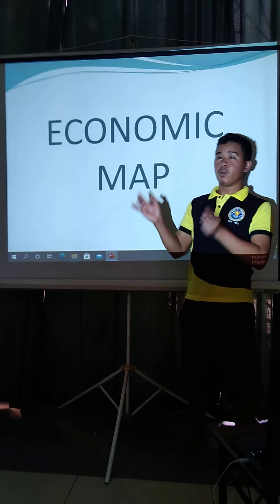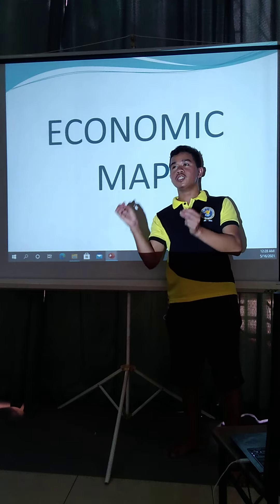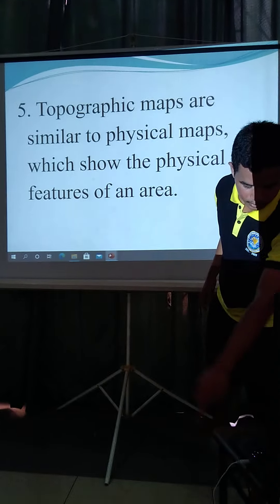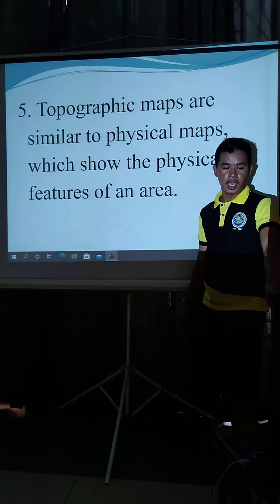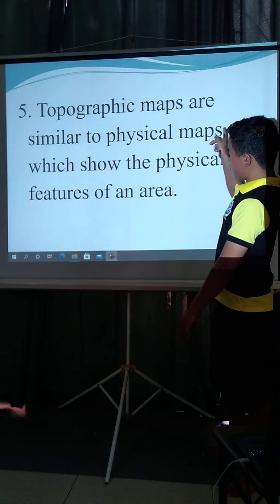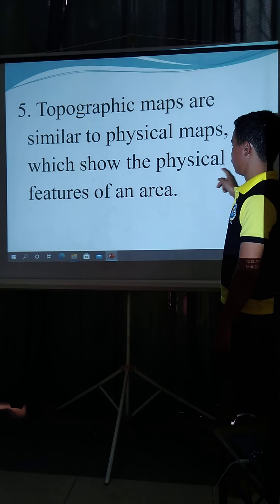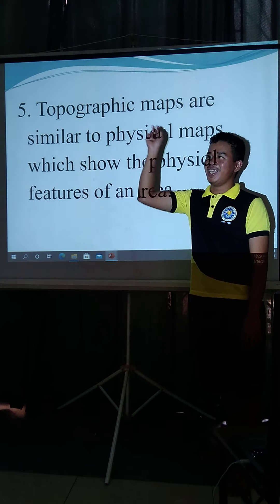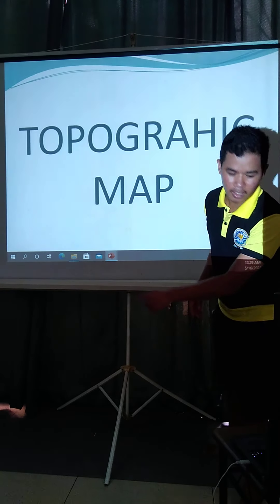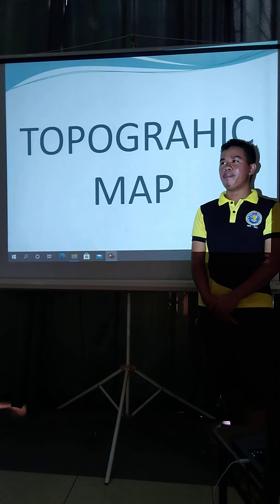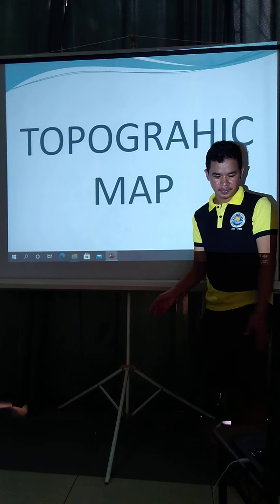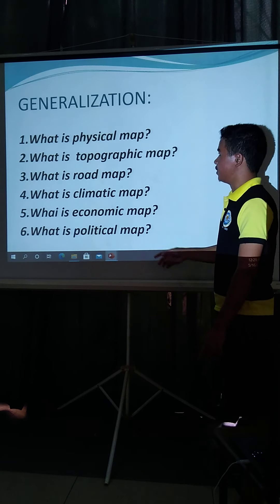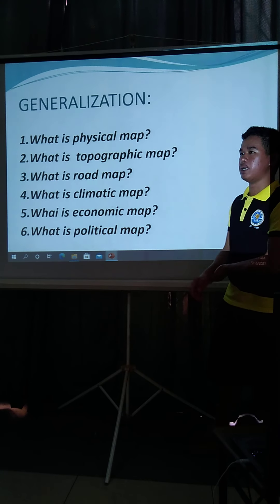Number four talks about the economic map — it shows the crops and industries that are present here in the Philippines. Number five: topographic maps are similar to physical maps, which show the physical features of an area. The answer is the topographic map.